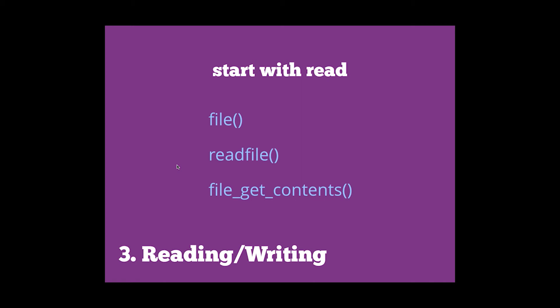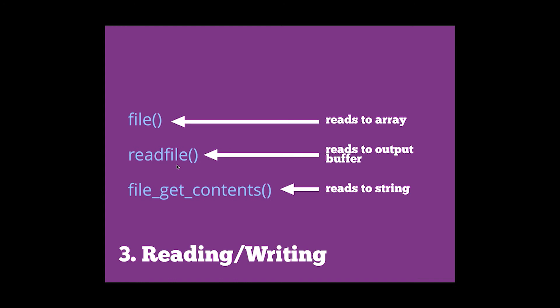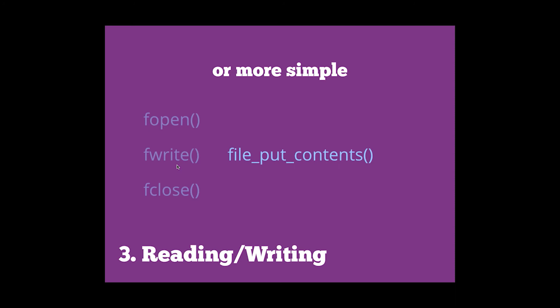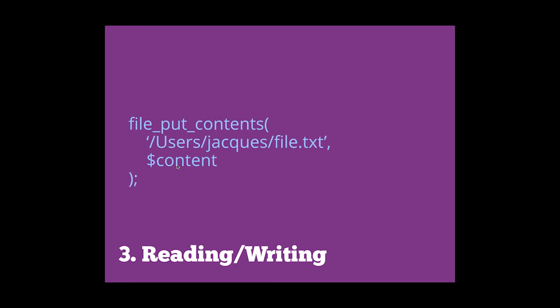For reading files, you have three options: file(), readfile(), and file_get_contents(). file() returns the contents into an array. readfile() reads to the output buffer. file_get_contents() reads to a string. It's important to know the difference. You typically want to use file() for manipulation, readfile() for outputting contents elsewhere — such as when downloading a file — and file_get_contents() for manipulation as well. Be wary with file() and file_get_contents() because the entire file gets loaded into server memory, which can crash your application if the file is large. The advantage of readfile() is there are no memory concerns for that particular case.